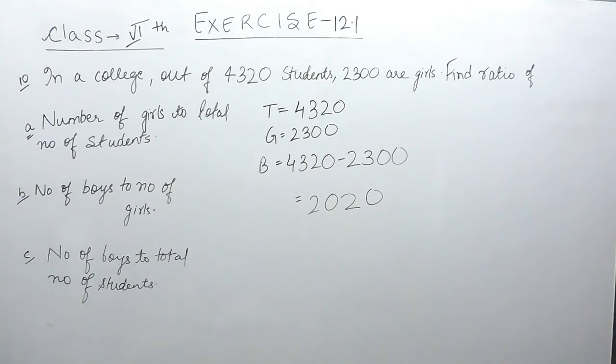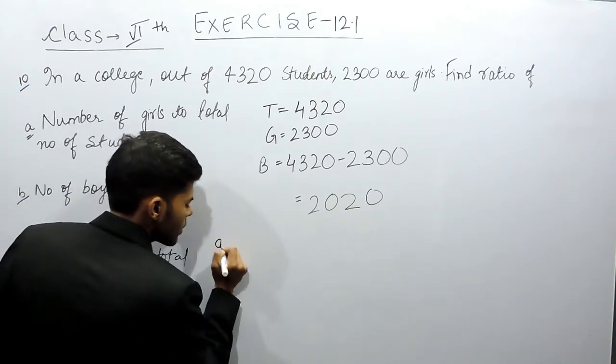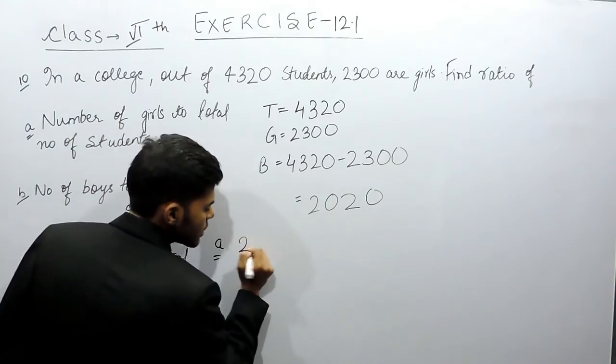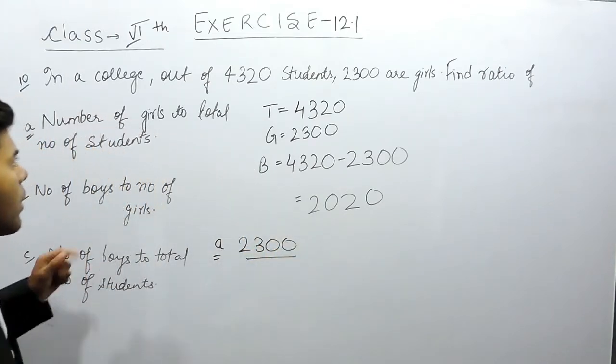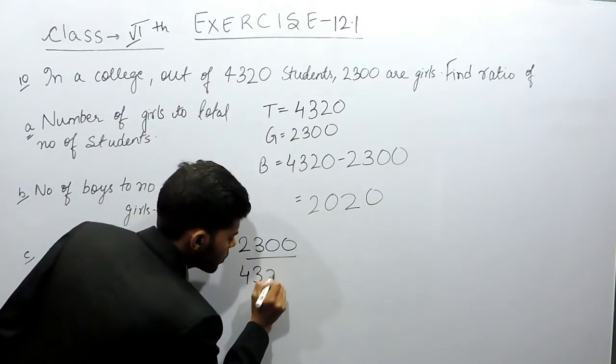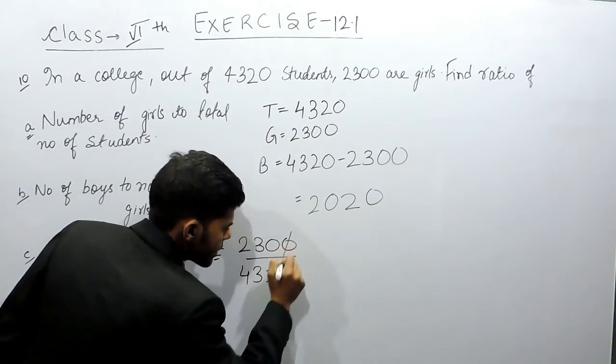In the first part we have to find number of girls to total number of students. Part A, number of girls is 2300 upon total number of students 4320, this is cancelled out.